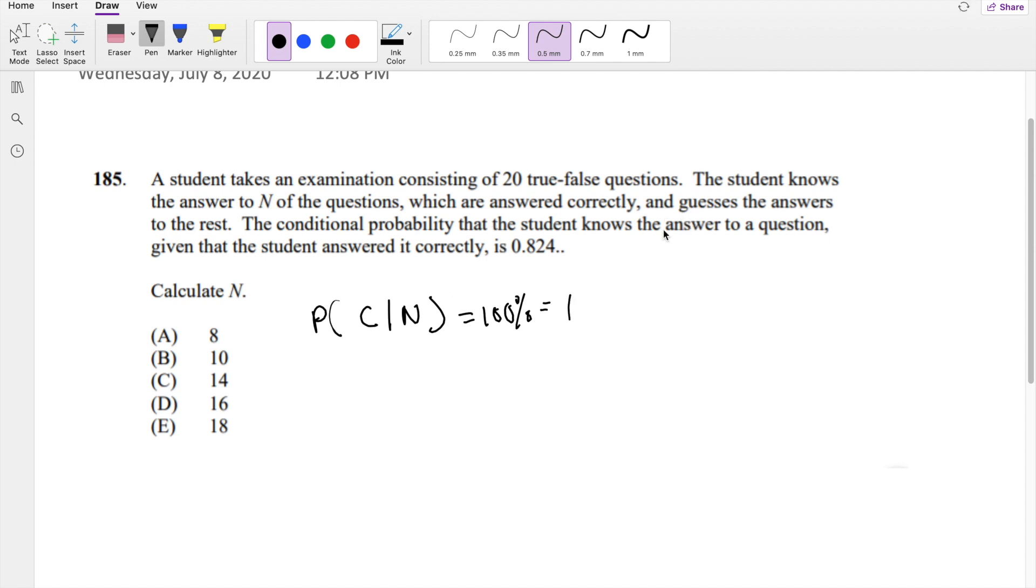And guesses the answer to the rest. So if the student guesses, does not know. If they do not know and they guess it, their probability of getting it correct, if it's a true and false question, that's a half.